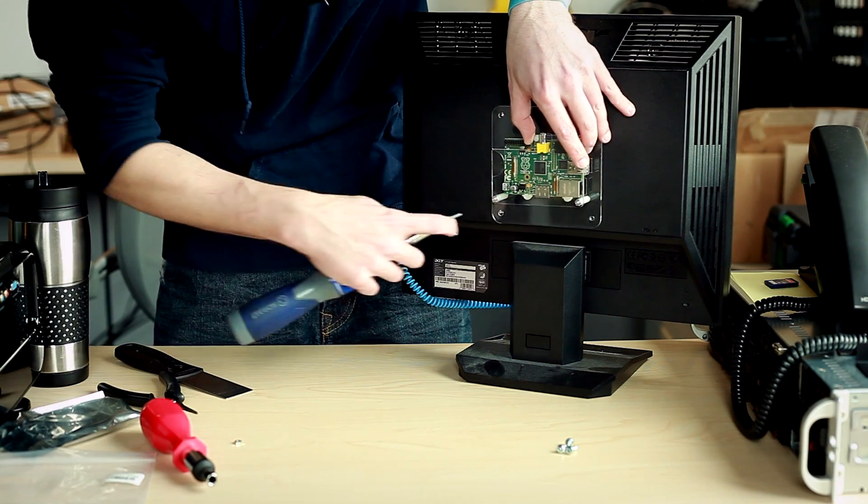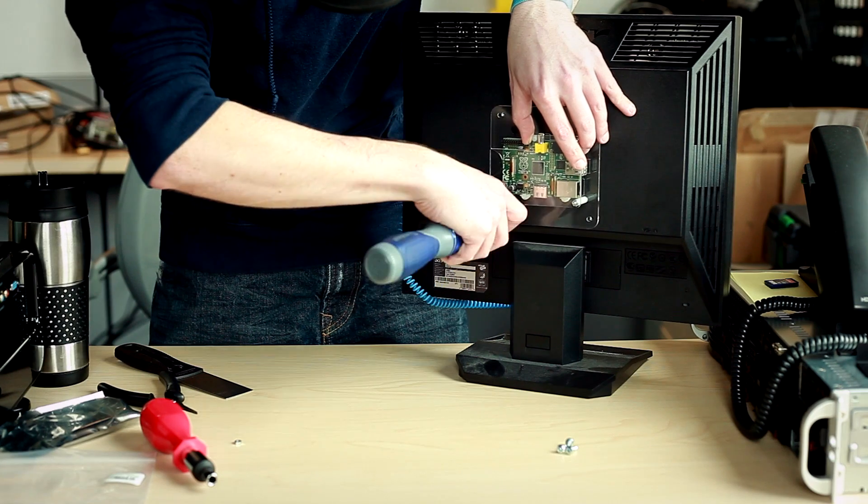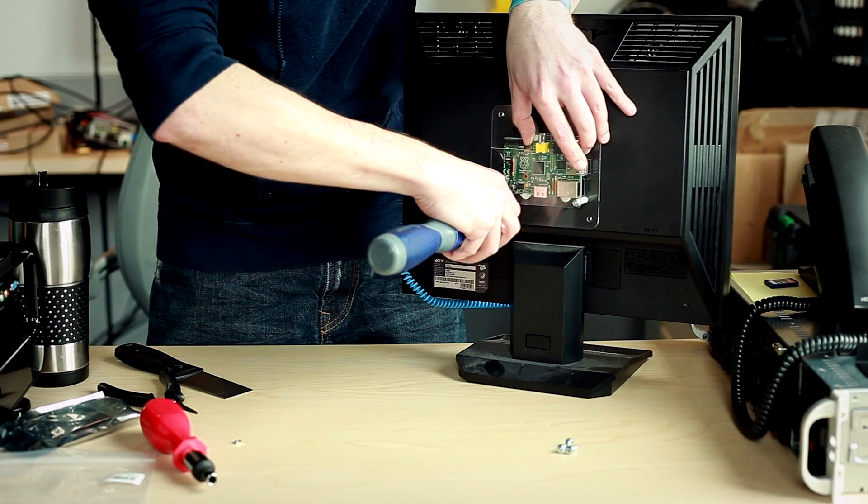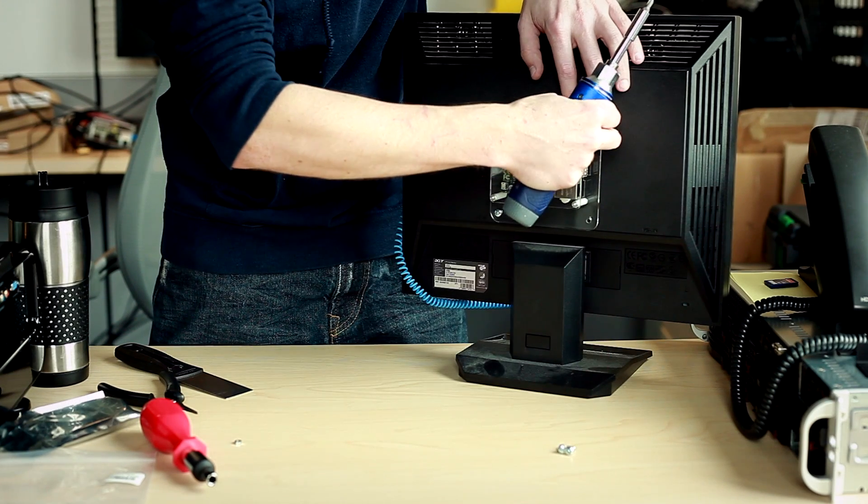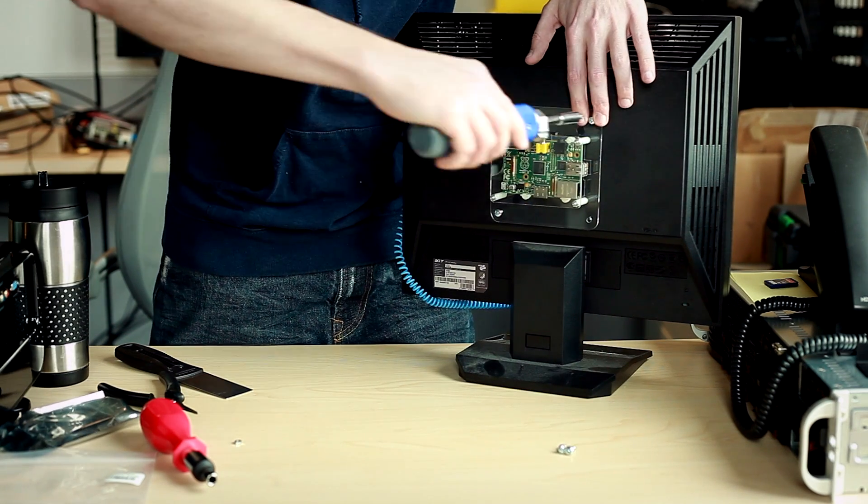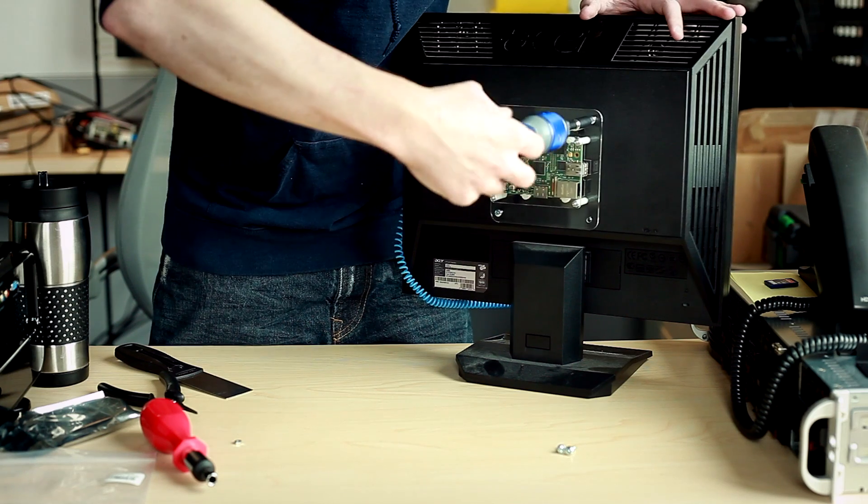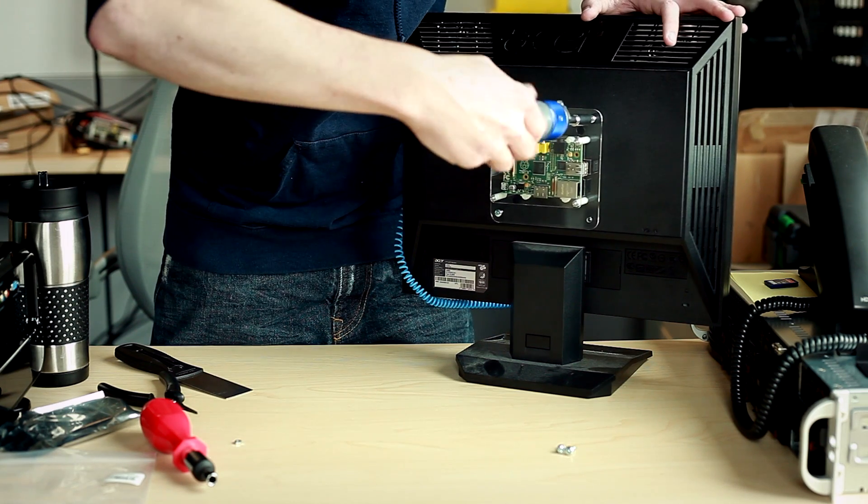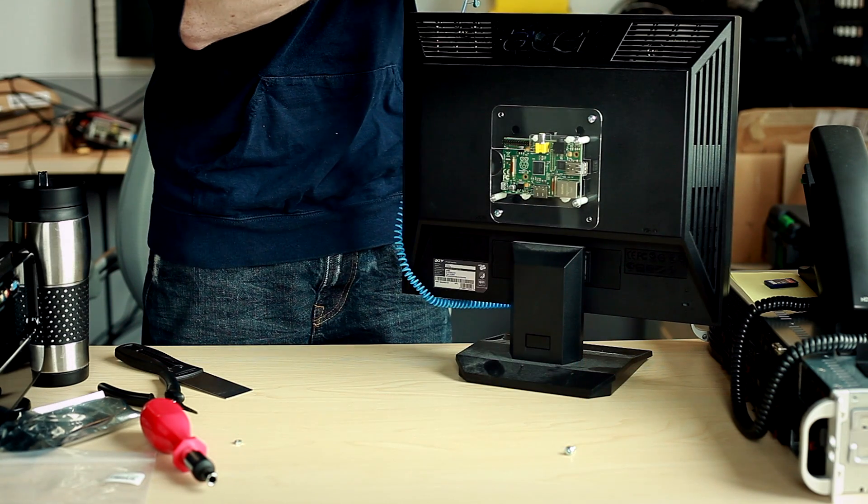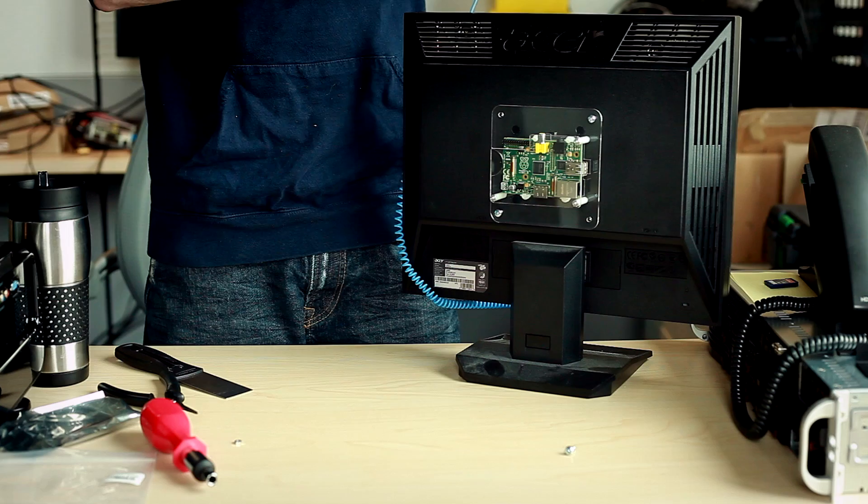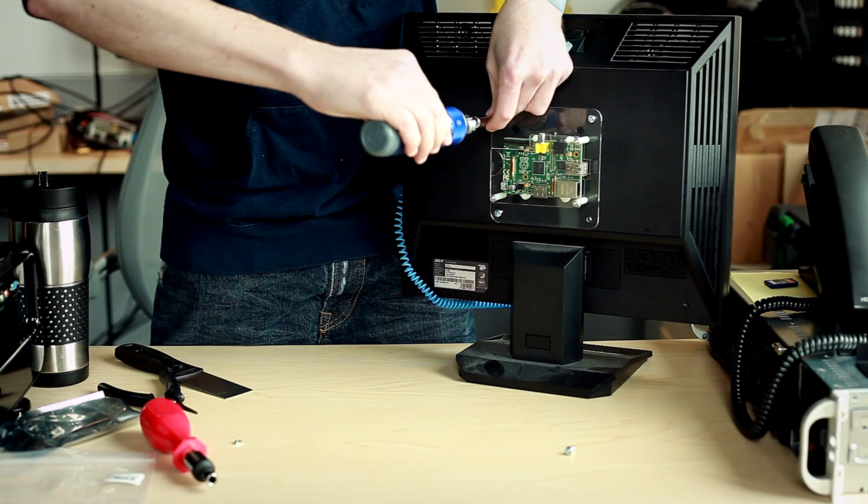So, go ahead and just take your VESA screw and put it straight in. I like to do opposing corners. That way it's not going to be unbalanced when you go to screw it in. And you don't need to do it too tight.